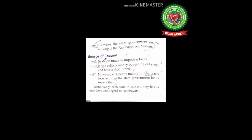Now let's read the last topic — sources of income for the Jila Parishad. One: it collects funds by imposing taxes. Two: it collects money by renting out shops and houses that it owns. Three: it depends mainly on grants received from the state government for its expenditure. Grants means a sum of money received from the state government. Remarkably, each state in our country has its own laws with regard to panchayats.